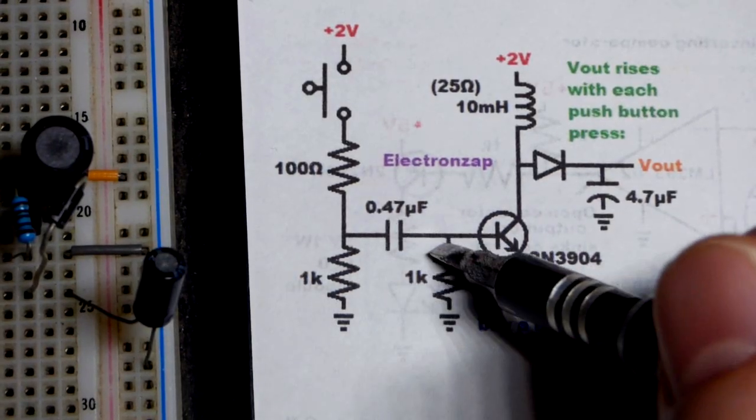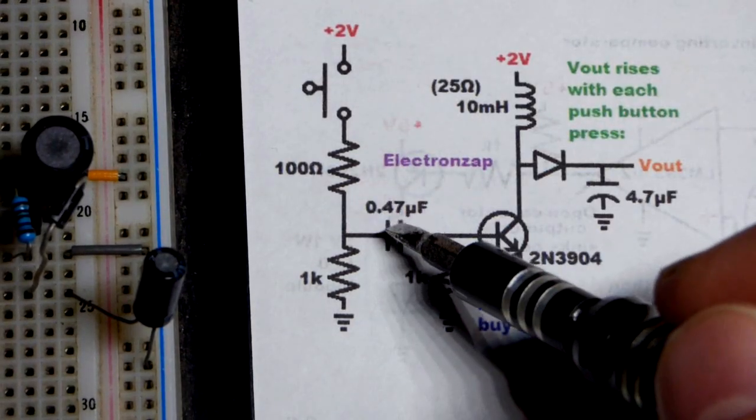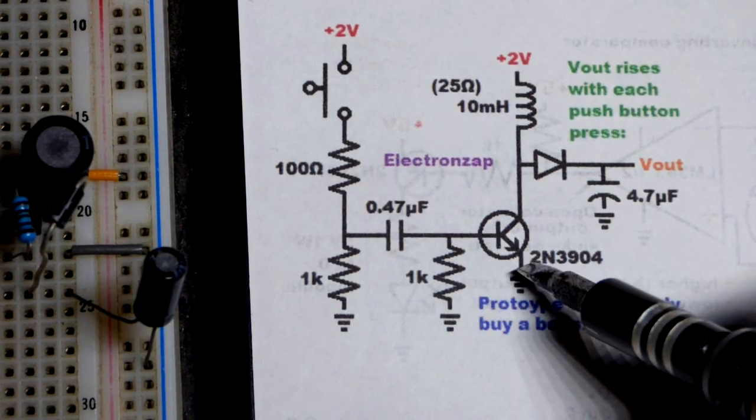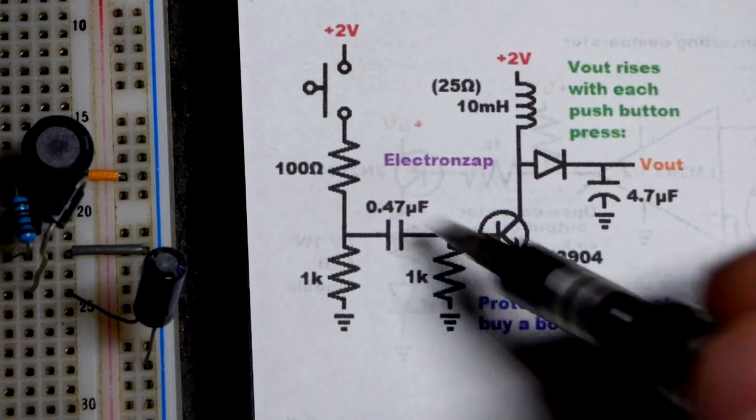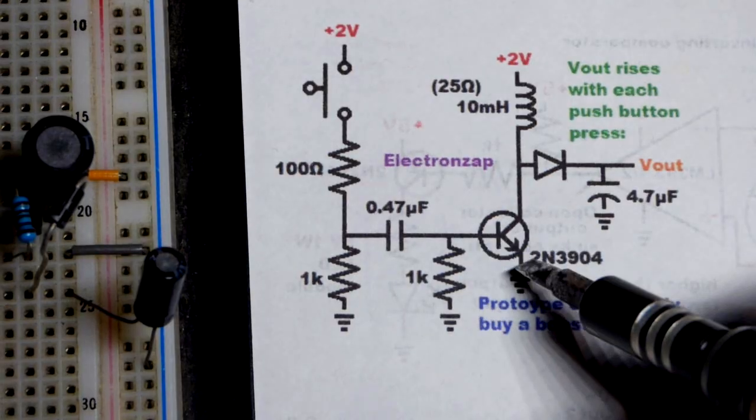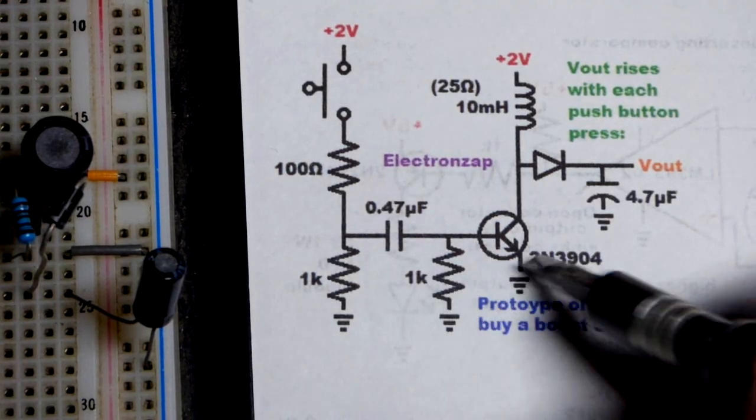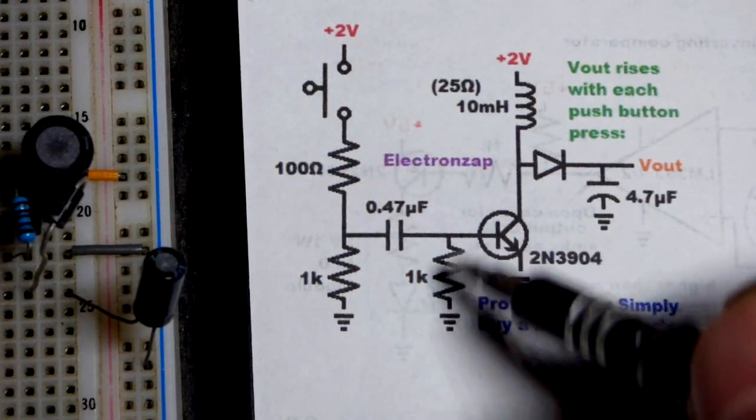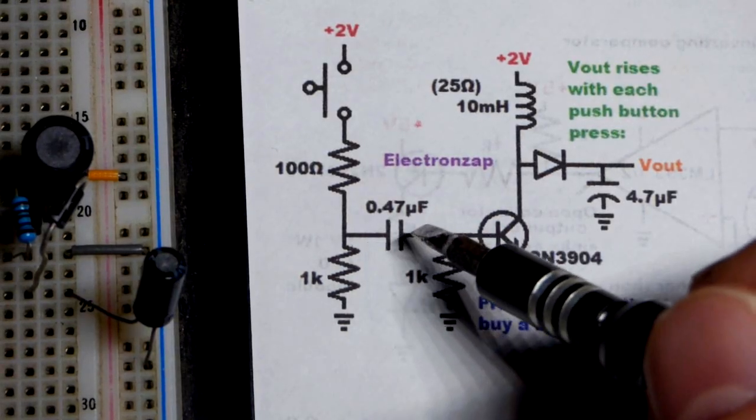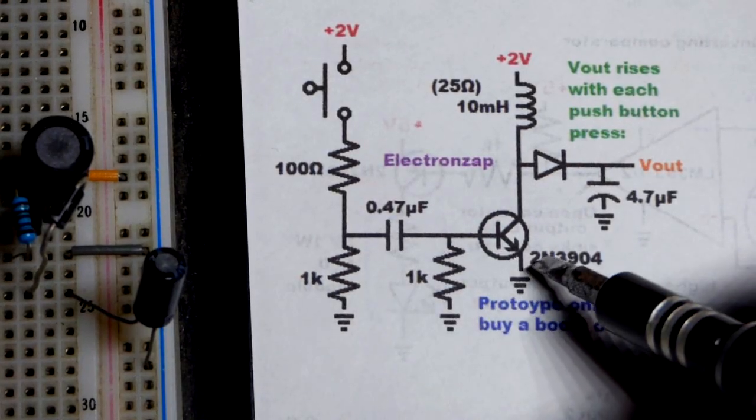So we got a 0.47 microfarad capacitor right there. We press the button, that makes this side more positive, this side more negative. We release the button, we got 1,000 ohm resistors there to discharge the capacitor pretty quick, so we could use much faster pulses.